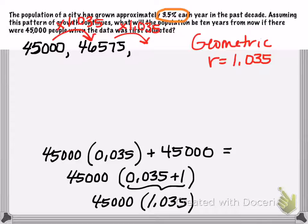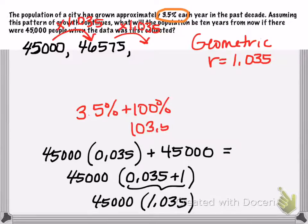So just don't forget that when you're dealing with these percentages, if we have 3.5% growth, essentially we need to add that growth to 100%. So we're looking at 103.5% total, which as a decimal is 1.035.